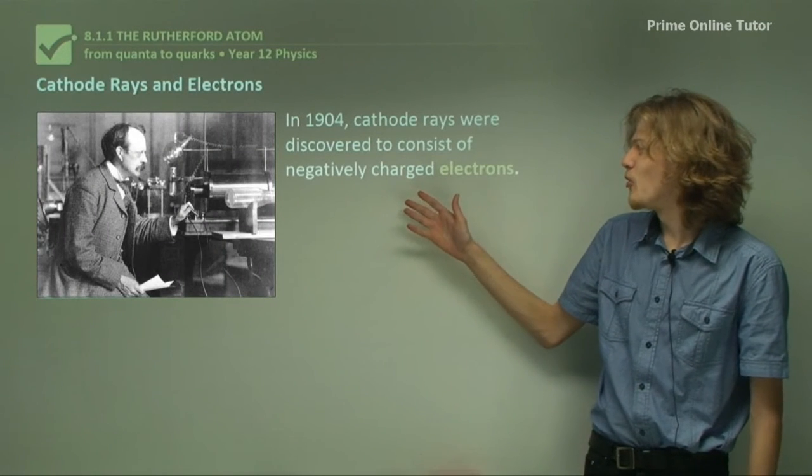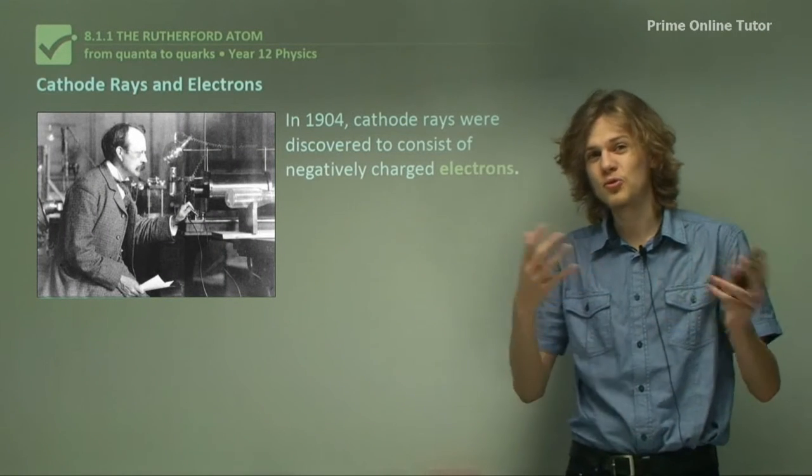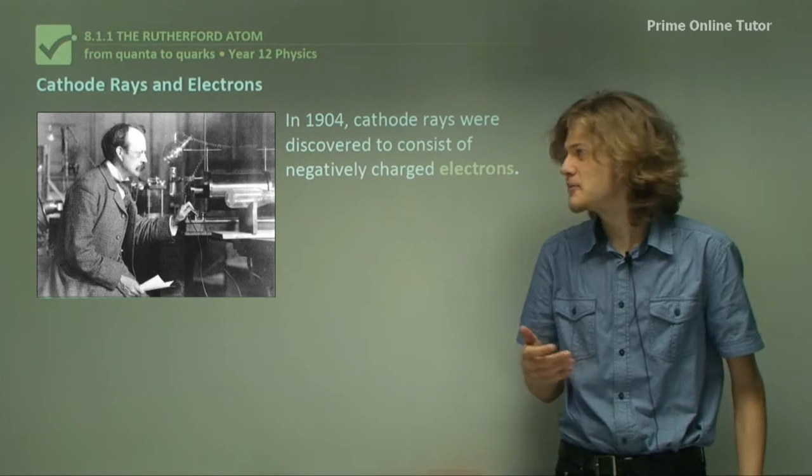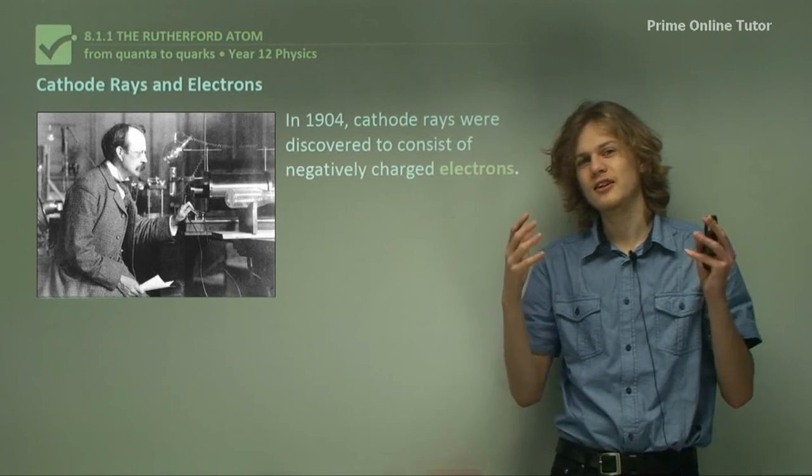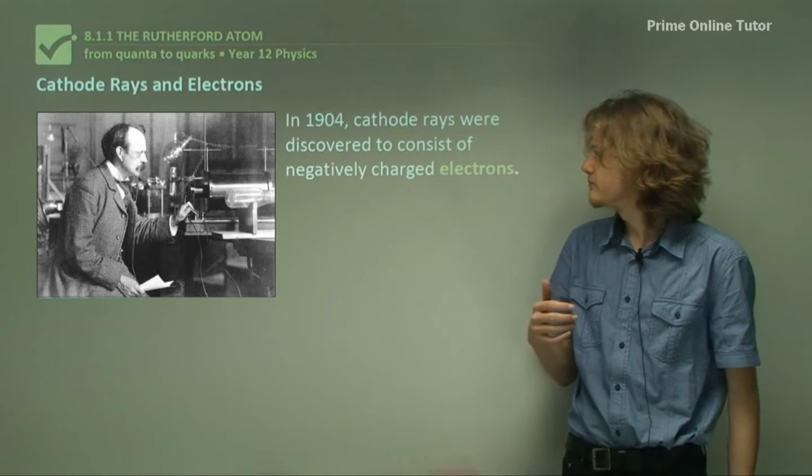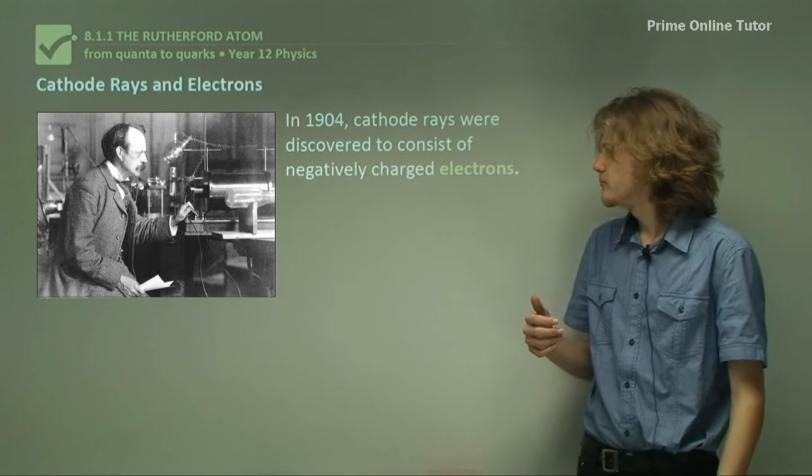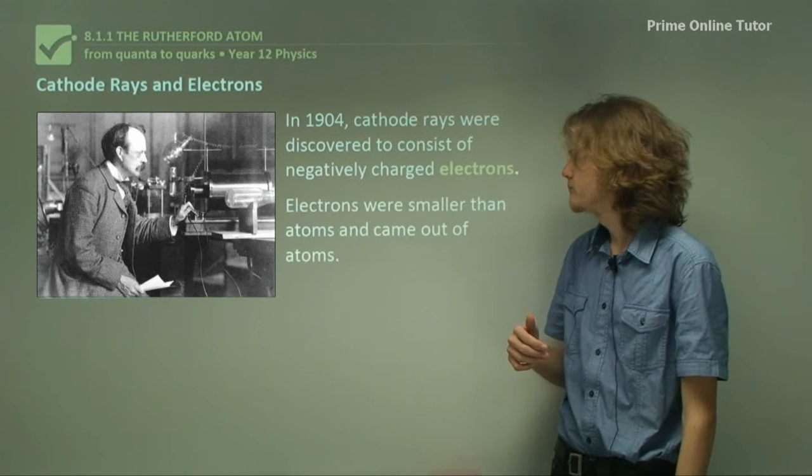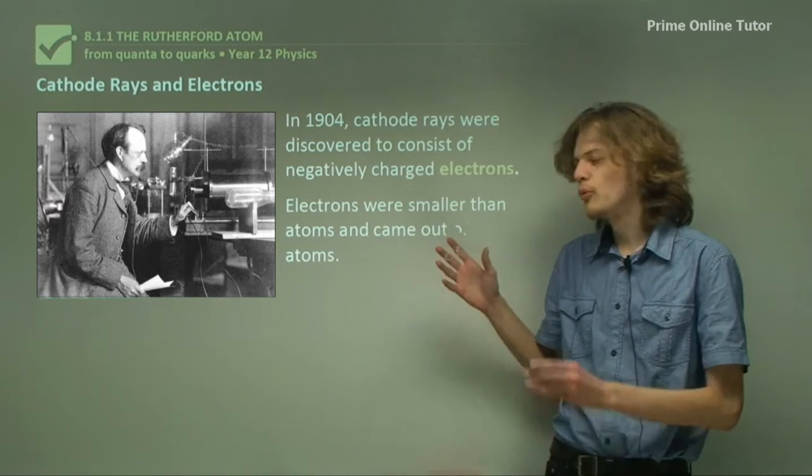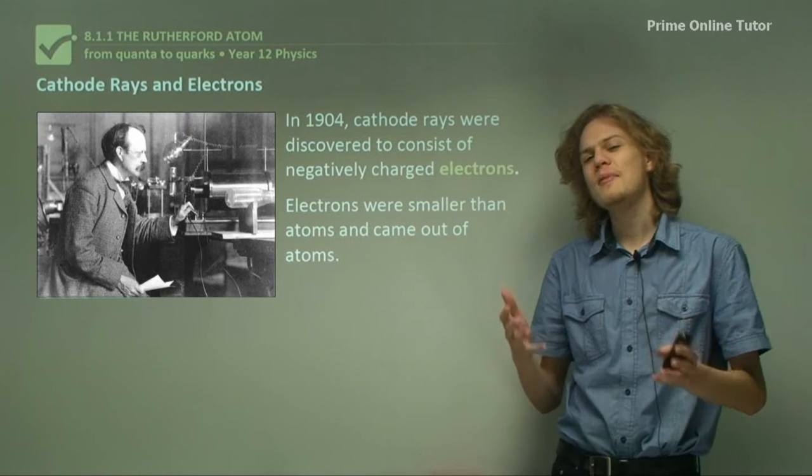So in 1904, cathode rays, which of course we've learned about in Ideas to Implementation, were discovered to consist of negatively charged particles called electrons. So J.J. Thompson, of course, was the discoverer. And electrons were smaller than atoms and they came out of atoms.